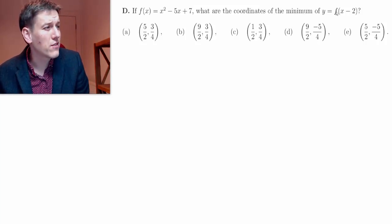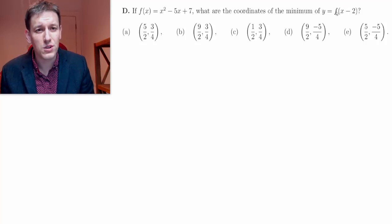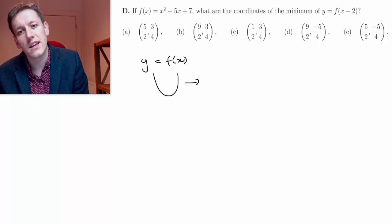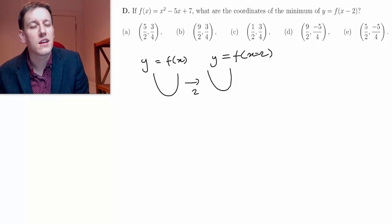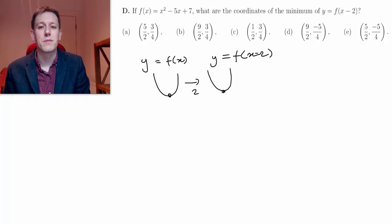So y equals f of x minus 2 produces a translation by two units in the x direction. If I've got the curve of y equals f of x, which is going to be a parabola like this, then y equals f of x minus 2 is just going to be shifted by two units in the x direction. So if I can work out the minimum of this parabola, I've almost automatically got the minimum of this parabola.